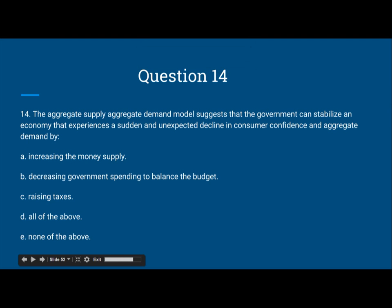Question 14. The Aggregate Supply-Aggregate Demand model suggests that the government can stabilize an economy that experiences a sudden and unexpected decline in consumer confidence in aggregate demand by: a. Increasing the money supply, b. Decreasing the government's spending to balance the budget, c. Raising taxes, d. All of the above, or e. None of the above.